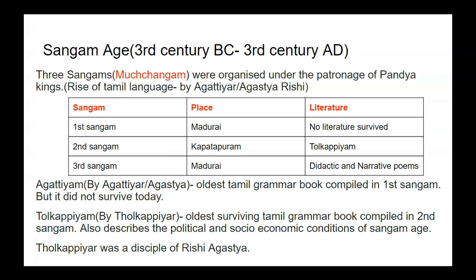The Sangam age spans 3rd century BC to 3rd century AD. The three Sangam, or Muchangam, was organized under the patronage of the Pandya King, which led to the rise of Tamil language, especially by Agastya. The first Sangam was held at Madurai and no literature survived. The second Sangam was held at Kapatpuram and only Tolkapiam survived from it.